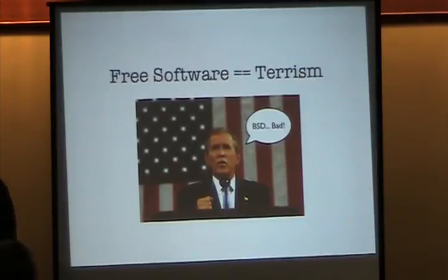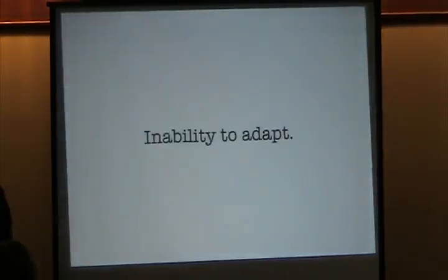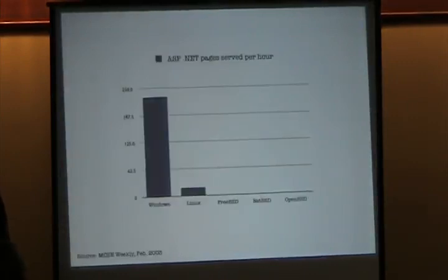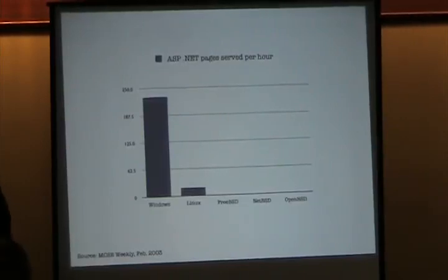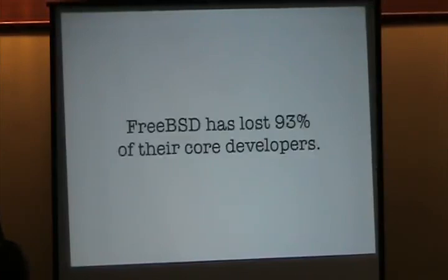BSD — bad. As a community, BSD has had a surprising inability to adapt. As we can see by this graph, the number of ASP pages served per hour on Windows servers far outnumbers those on Linux and all the BSDs. Linux actually did generate some — we have to presume it's because of obfuscation, renaming their files with an .asp extension. Of course, a significant loss of talent — FreeBSD has lost 93% of their core developers. It's assumed that most of them jumped ship to DragonFly BSD. Unfortunately, since none of the BSDs share code, they usually have to start from scratch, tracing the project's roots from 4.4BSD Lite.